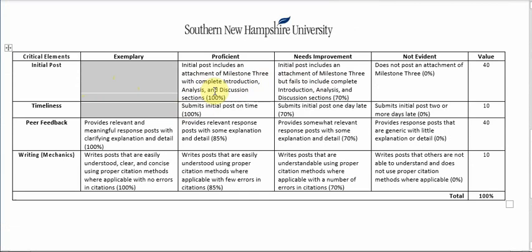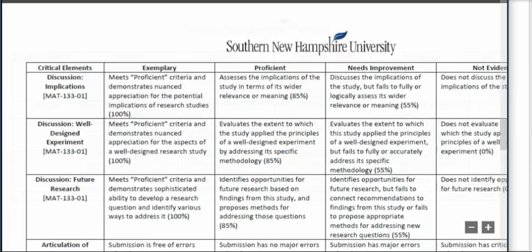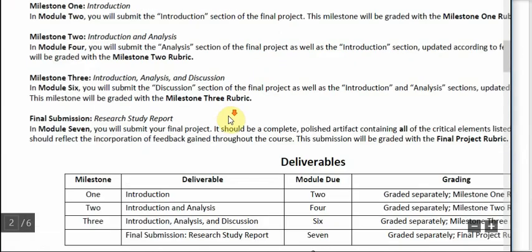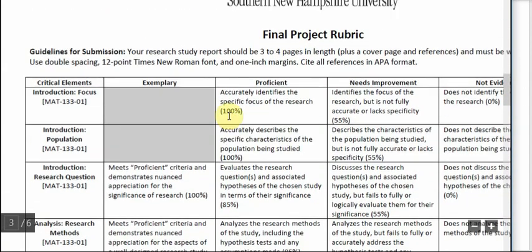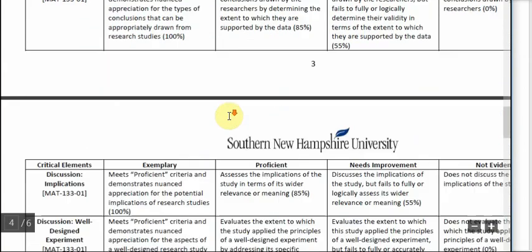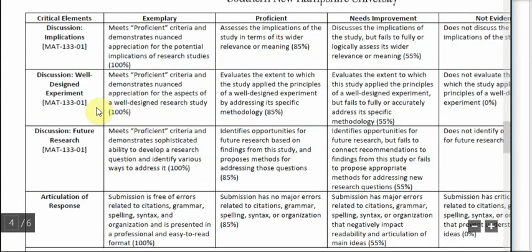Your instructor will give you your last bit of advice when you submit Milestone 3 before submitting the final project. Some students may have a perfect assignment that hits exemplary where it's supposed to be exemplary, and your instructor should let you know that. Or the instructor will give you some tips on things you want to touch up. Looking at the final project rubric, you'll see that under the discussion part — which is basically the Milestone 3 part — you are asked to hit exemplary on the three different bullet points.